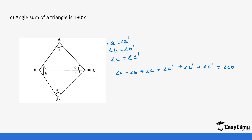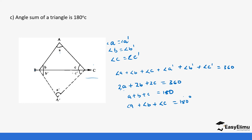These sides are equal: A equals A prime, B equals B prime, C equals C prime. So this is the same as 2A plus 2B plus 2C equals 360°. Dividing by 2, this is the same as A plus B plus C equals 180°. That tells us that the angles in a triangle add up to 180°. Each triangle on its own — the total is 180°.